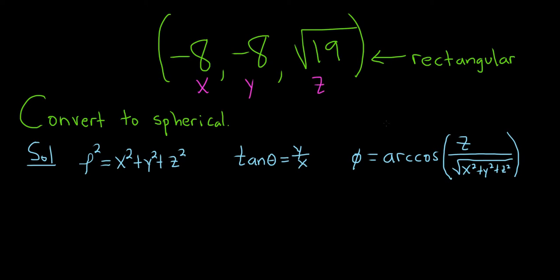The final answer should have the form rho, theta, phi. That's the form of a point in spherical coordinates.